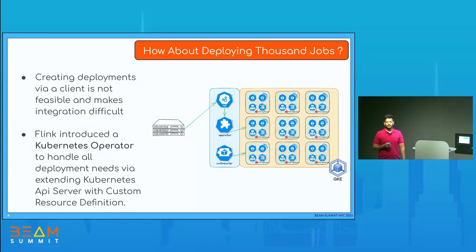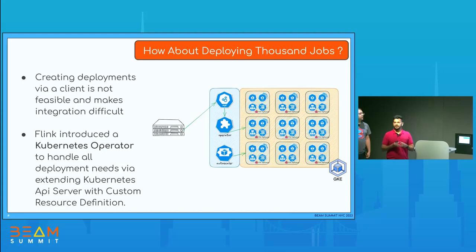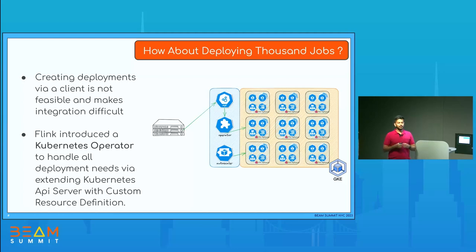For one job, we need to create so many components — a job manager, task managers, metrics, and all logging configured properly. If we have to do this for more than 5,000 or 10,000 jobs, this is definitely not feasible. Luckily, Flink introduced the Flink Kubernetes Operator, which exposes CRDs — custom resource definitions of Flink deployments — and completely manages the deployment lifecycle. A Kubernetes operator is an extension of Kubernetes software which exposes CRDs; in our case, it's a Flink deployment CRD, and it manages the whole lifecycle of the application.